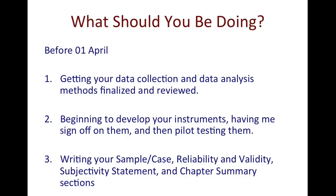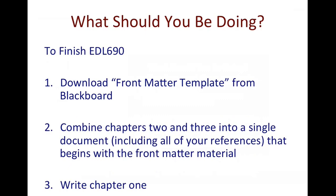Once you've been given the go-ahead to start your study, look ahead to finishing 690. Essentially all you need to do is write Chapter 1 and get all your materials together in a single document. Download the Front Matter template Word document from Blackboard, open it, and add Chapters 2 and 3 along with all your references and appendices. Then go back to the beginning, right after the Front Matter content and after the section break, and add Chapter 1 into that document.